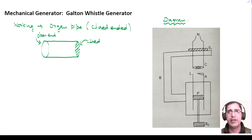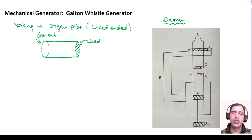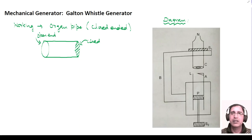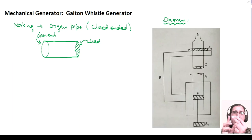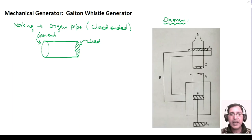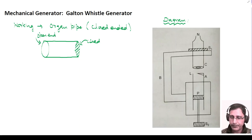You can see that you have an organ pipe which is closed at one end and open at the other. A simple everyday example is a pen cap — you can see that one side is closed but the other side is open. So a simple pen cap is a good analogy for this system.